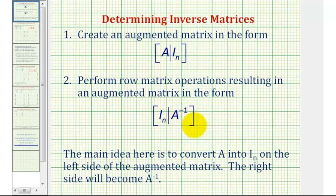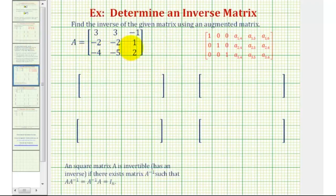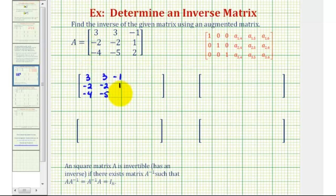The main idea is to set up the augmented matrix where matrix A is on the left side, perform row operations to form the identity matrix from matrix A, and the right side will be A inverse, or the inverse of the original matrix. Because we're given a three-by-three matrix, we'll have the given matrix on the left, and on the right side we'll have a three-by-three identity matrix. So we'll have a three-by-six augmented matrix, where the first three columns come from matrix A, and the fourth, fifth, and sixth columns come from the three-by-three identity matrix.